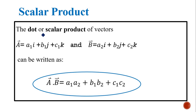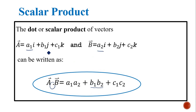Scalar product. The dot or scalar product of vectors a and vector b can be written as a dot b equal to a1 multiplied by a2, where a1 and a2 is the coefficient of i, plus b1 multiplied by b2, where b1 and b2 is the coefficient of j, and the last one c1 multiplied by c2, where c1 and c2 is the coefficient of k.